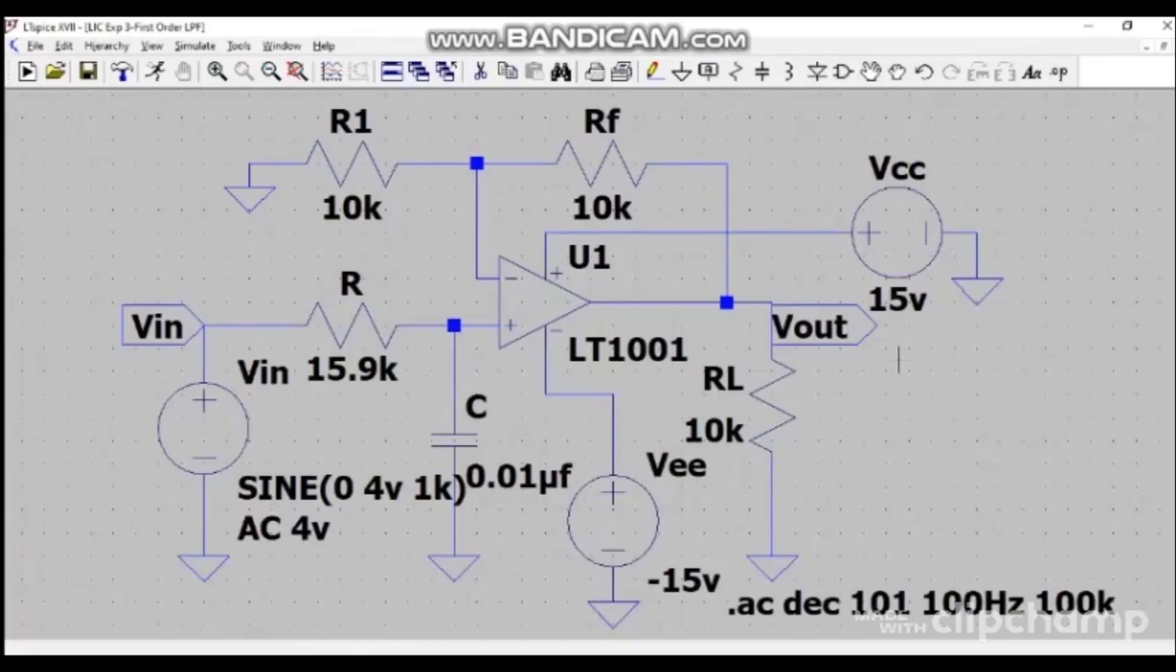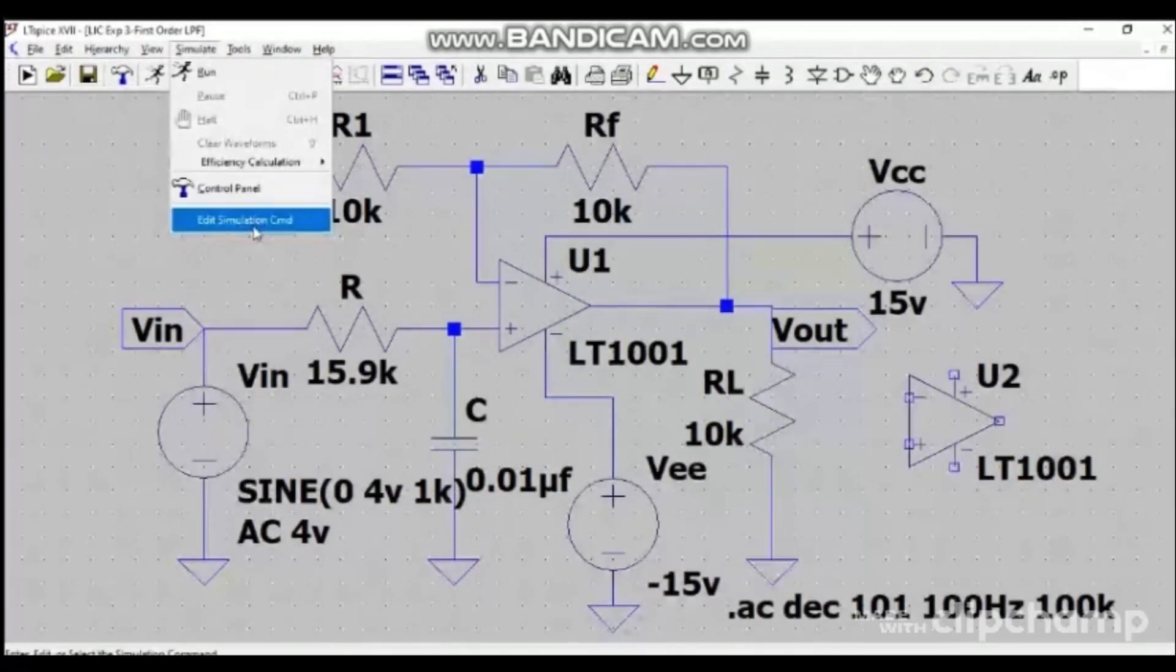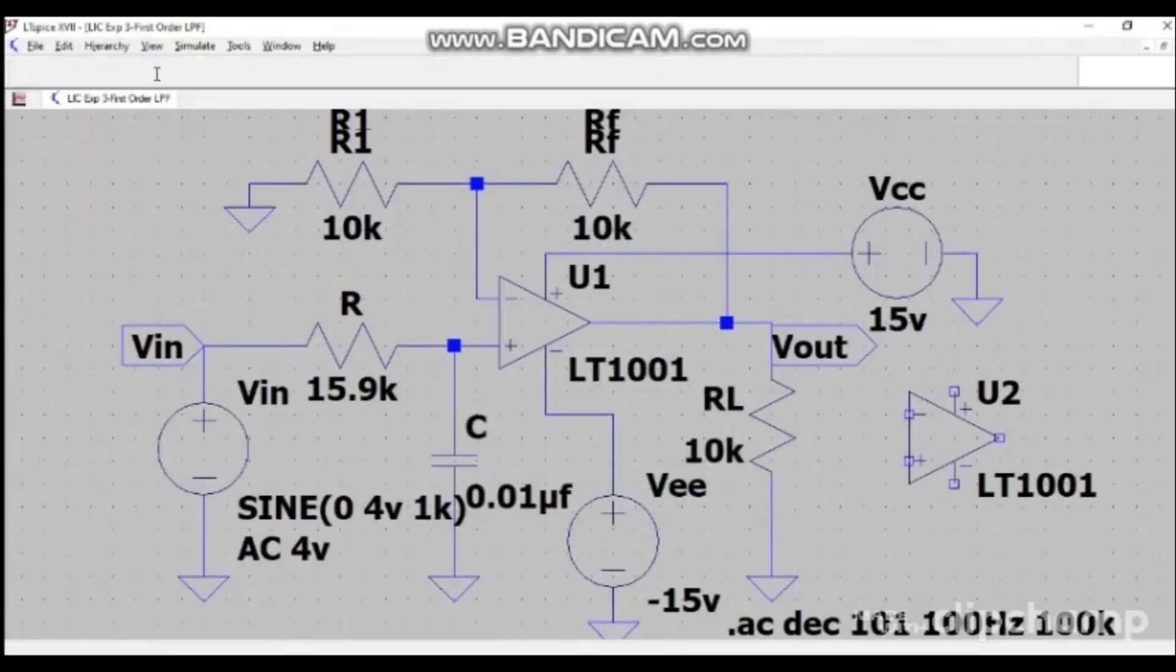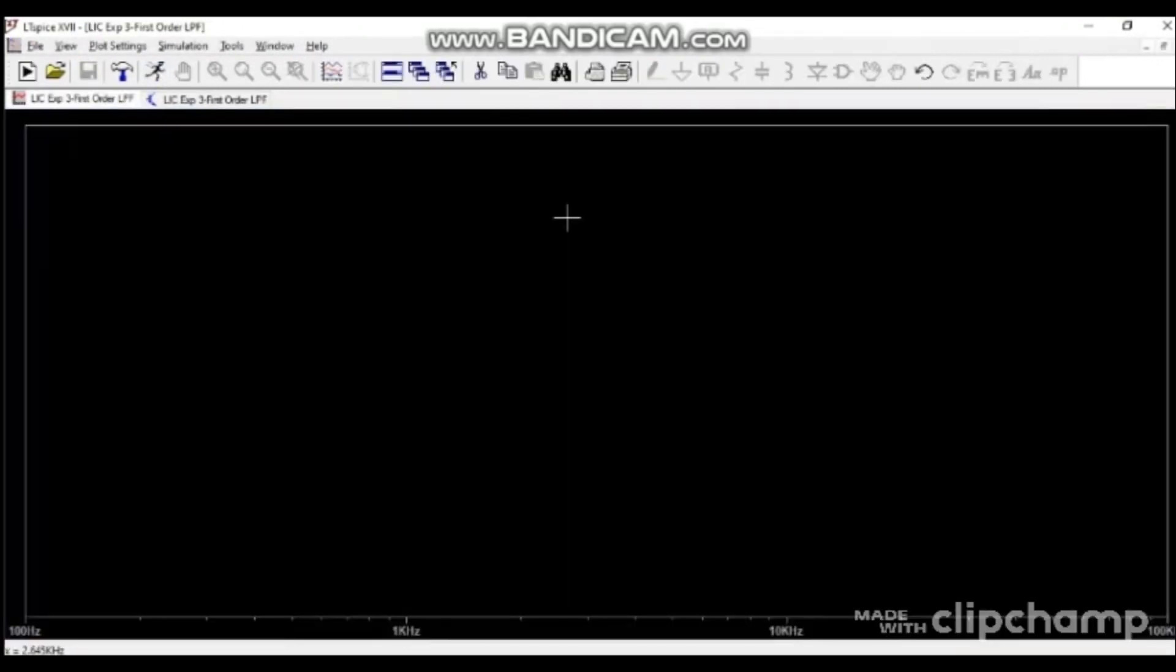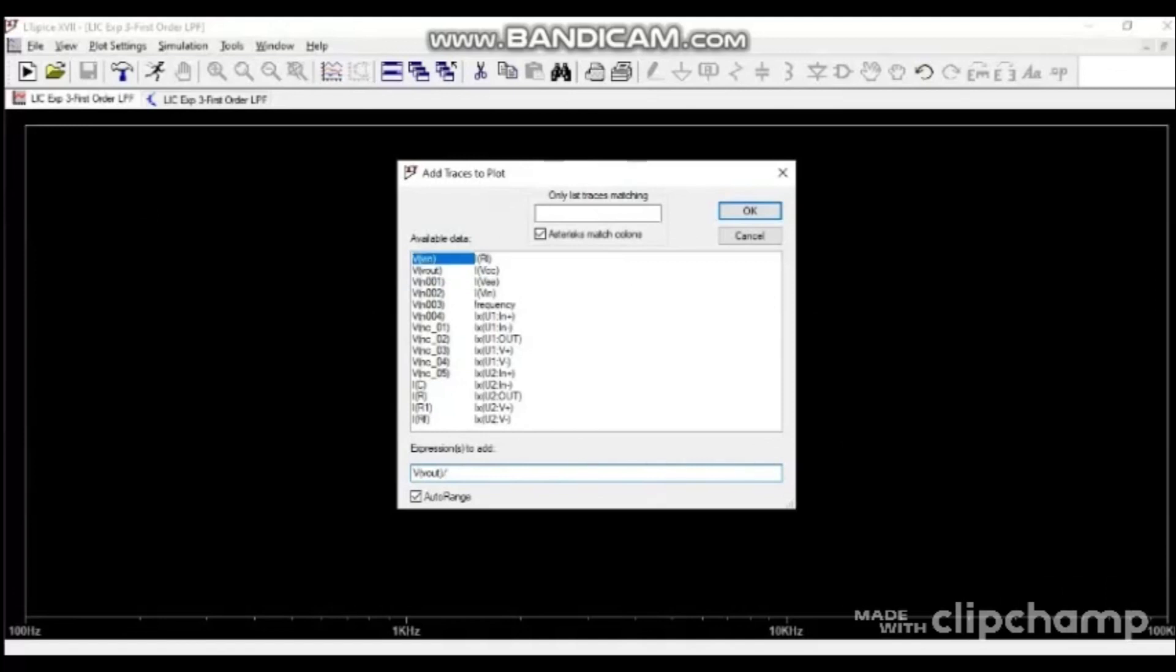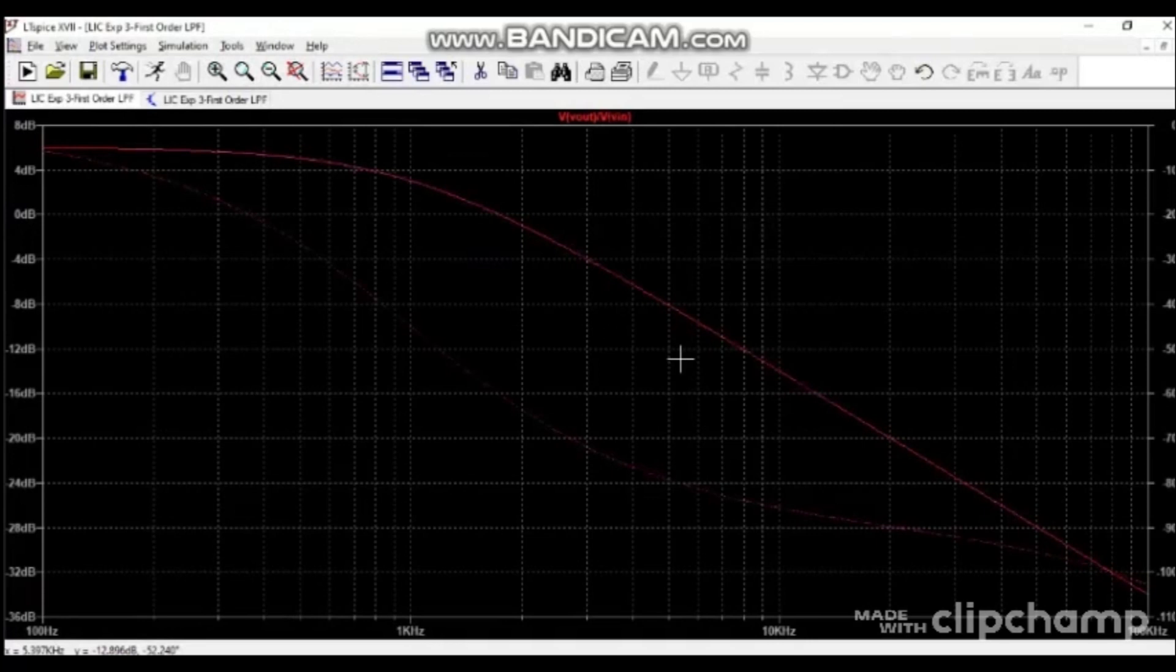Here we have demonstrated the first order low pass filter in the LT Spice. We have used OPAMP LT1001 which has the similar characteristics as that of the OPAMP 741. So to select this component, click on components, type its name, and click on ok. You will get this component. Here we have applied AC sine wave 4 volt input. To find out the frequency response, click on simulate, edit simulation command, AC analysis. Type of sweep is decade and enter the other parameters as required. Click on ok. Now click on run. You will get this pane. Now right click, add trace, Vout, plot pane, ok.